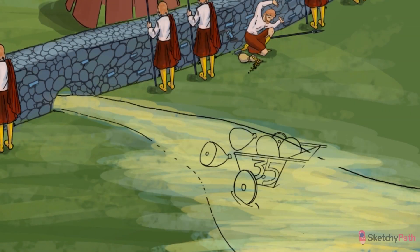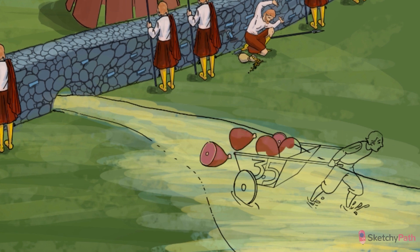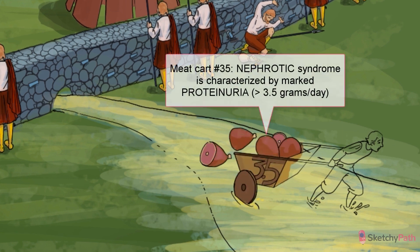Nephrotic syndrome is characterized by marked proteinuria. In adults, that means at least 3.5 grams of protein lost in the urine each day.